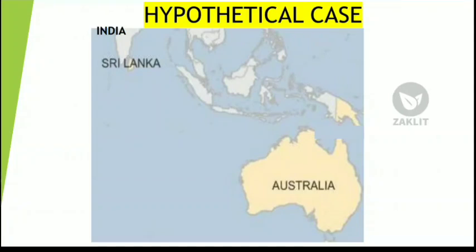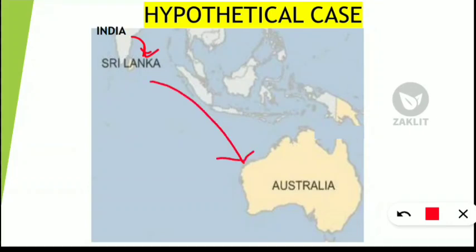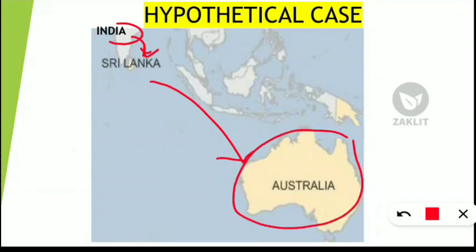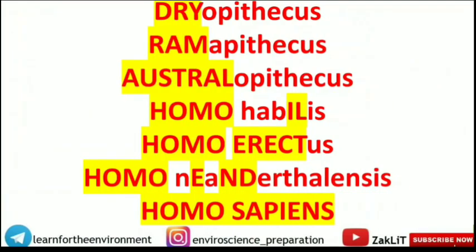To remember these names and the chronological sequence of human evolution, we will go through a hypothetical case. We all know that Sri Ram went from India to Sri Lanka through Ram Setu to fight Ravana. In this hypothetical case, Sri Ram has won that war and is now moving towards Australia to fight against evil humans — traveling from the dry land of India to Australia.